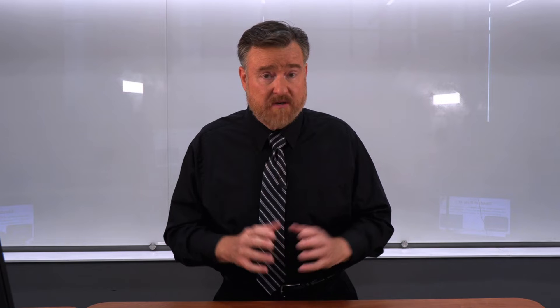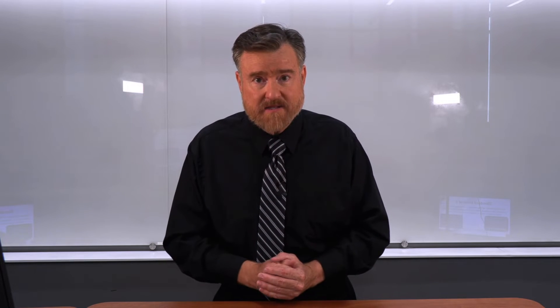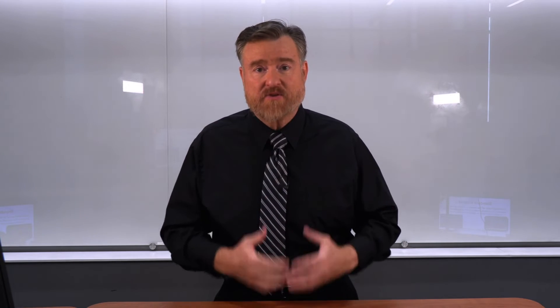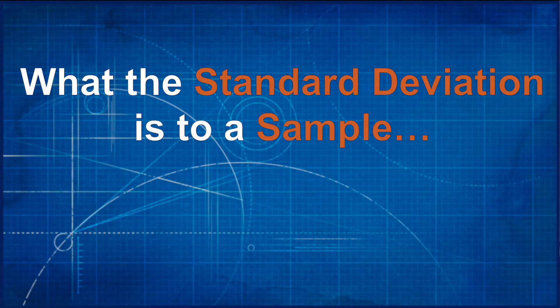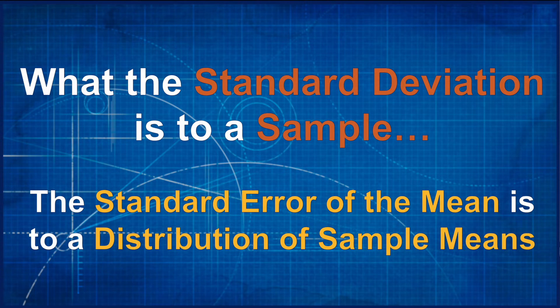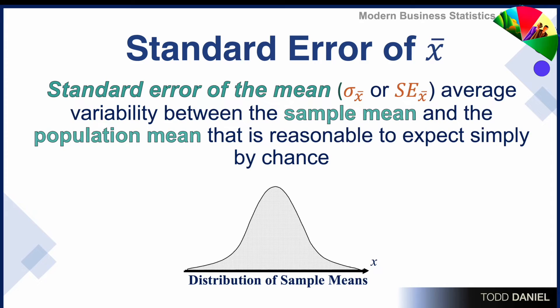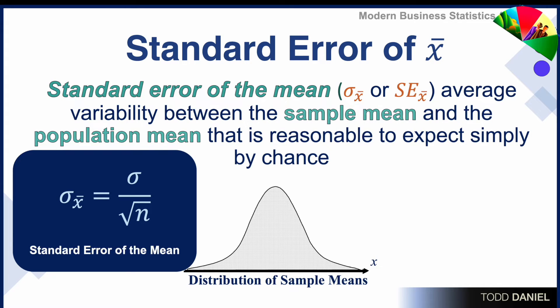But then we created our distribution of sample means. Not every sample mean was the same — there is variability in those sample means. The variability in the distribution of sample means is the standard error of the mean. What the standard deviation is to a sample, the standard error of the mean is to the distribution of sample means. The standard error of the mean is the average variability between the sample mean and the population mean that is reasonable to expect simply by chance. Every sample mean deviates somewhat from its population mean, and the difference between any given sample mean and the population mean that occurs by chance is our standard error of the mean.